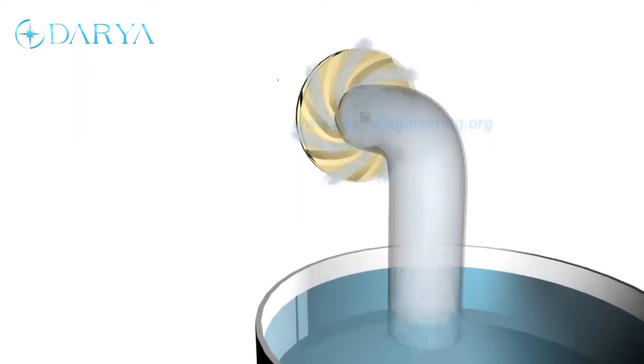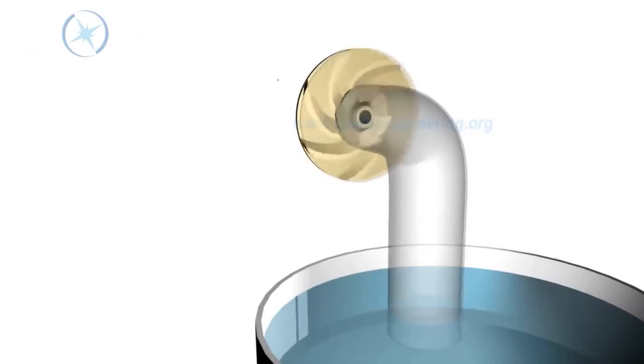This is the reason why priming is important for centrifugal pumps. If no water is present initially, the negative pressure developed by rotating air at eye of impeller will be negligibly small to suck fresh stream of water.